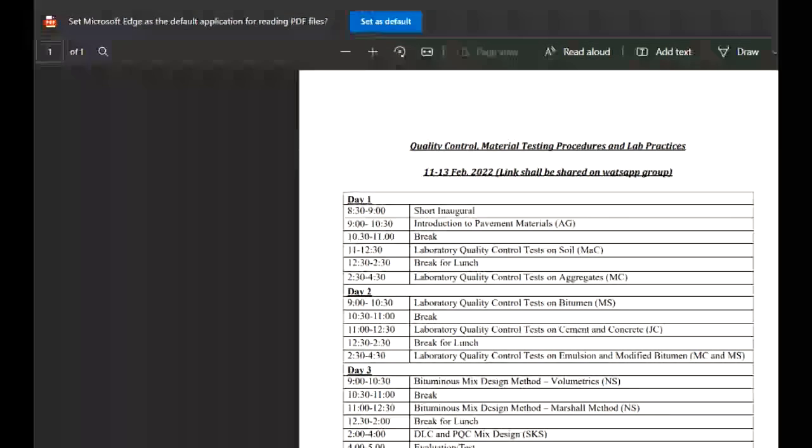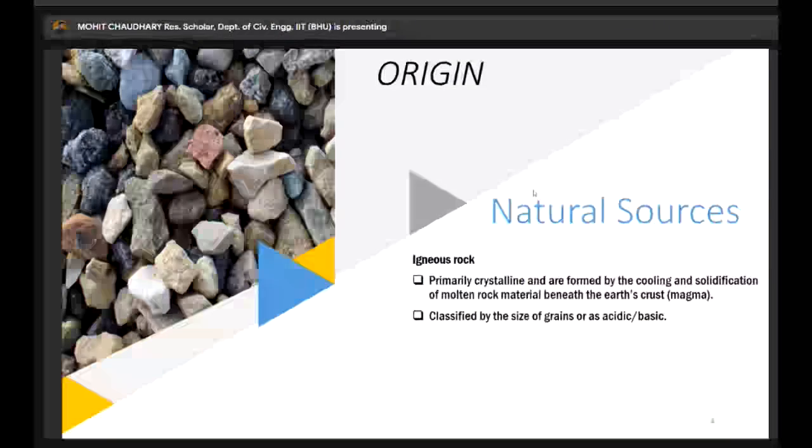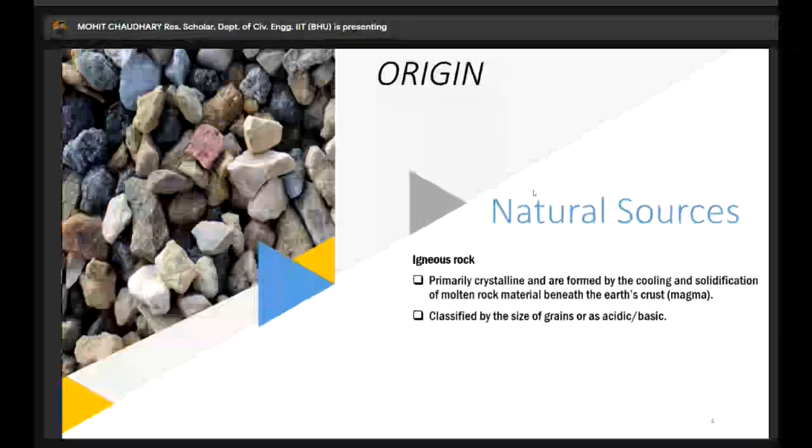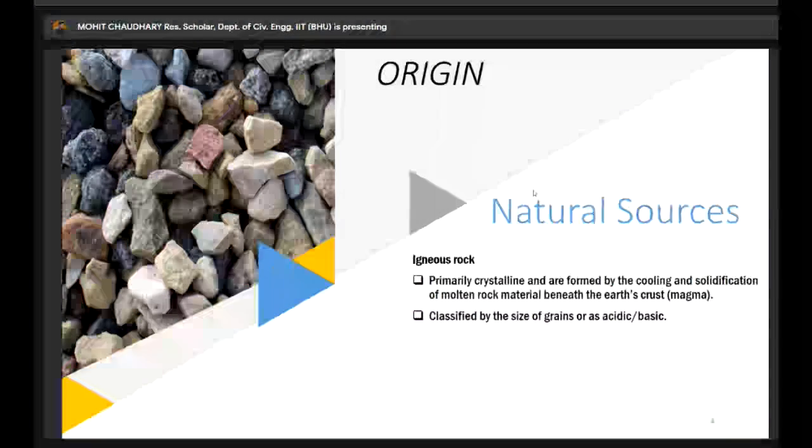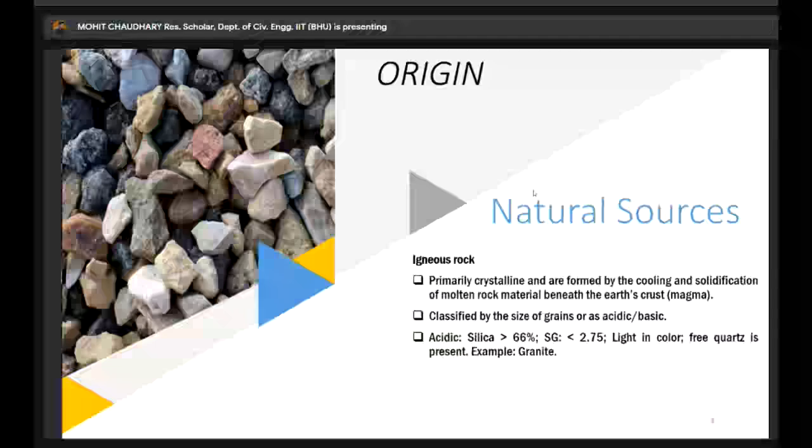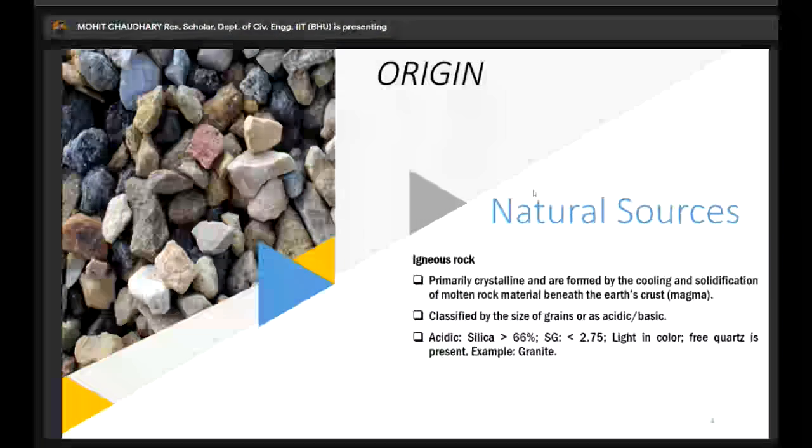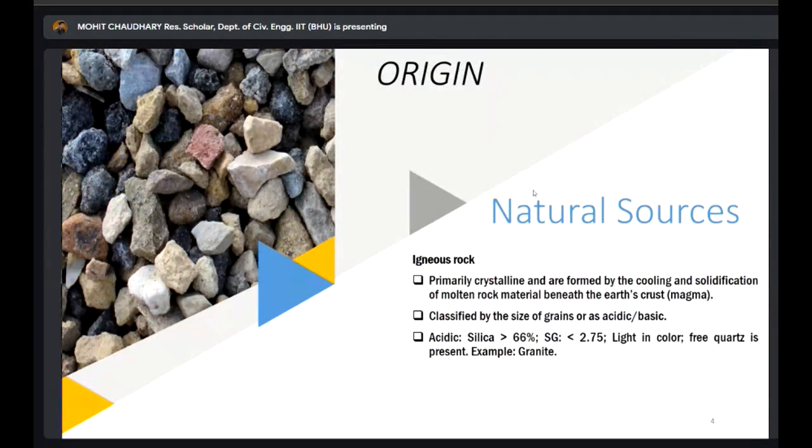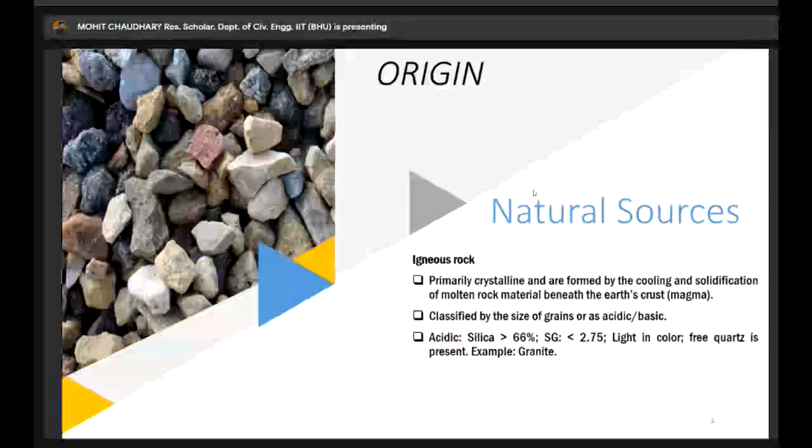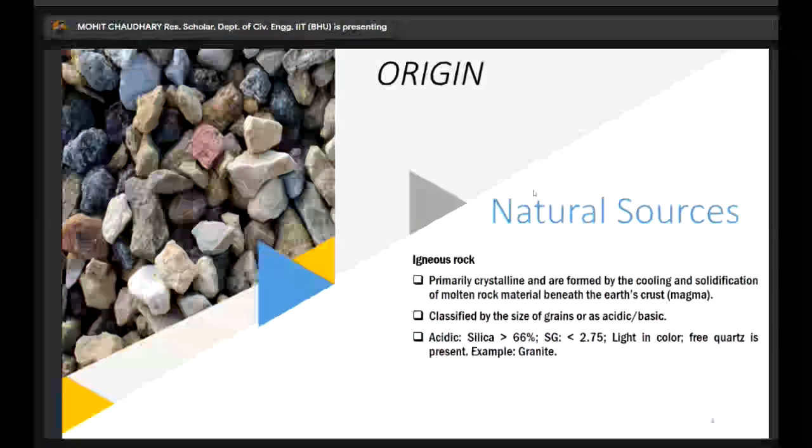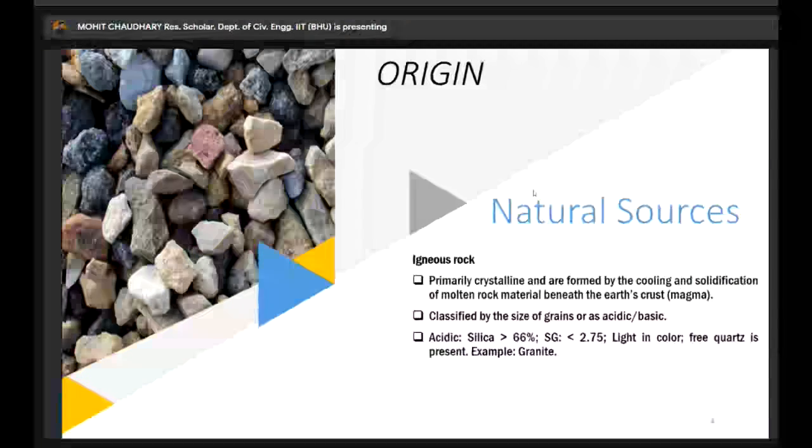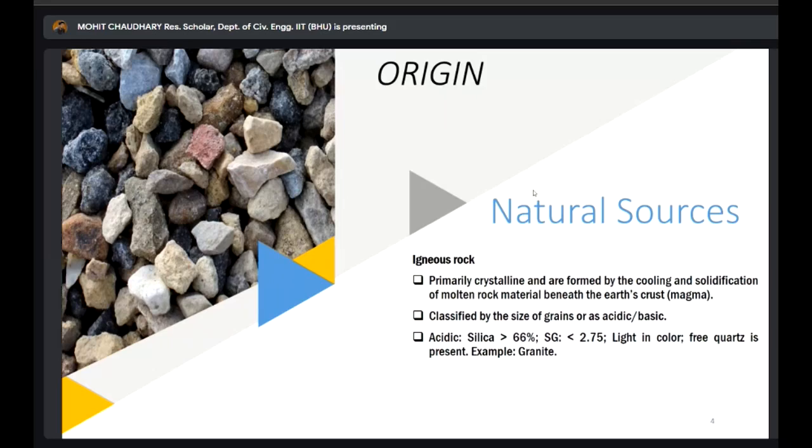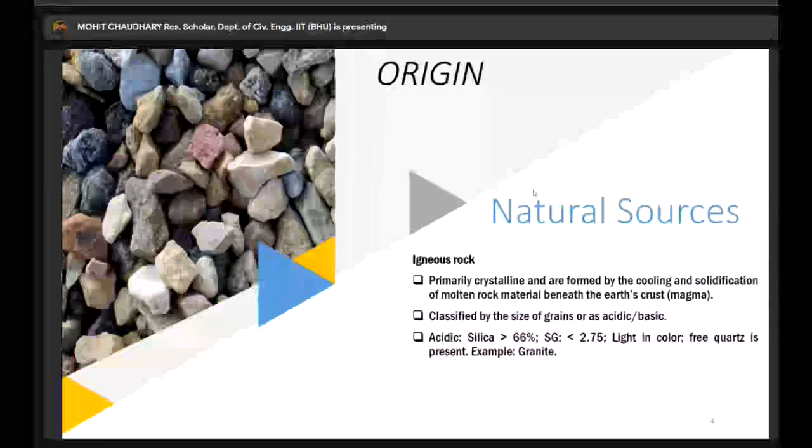It is basically classified by the size of grains - fine grained or coarse grained - or on the basis of whether it is acidic or basic. Acidic rock has high silica content, more than 66%, specific gravity is low, less than 2.75. They are very light in color and free quartz is present. One common example of acidic igneous rock is granite.